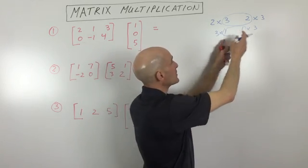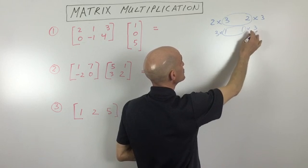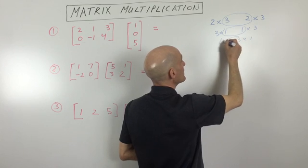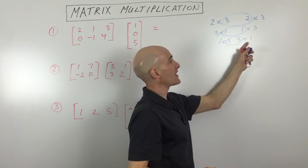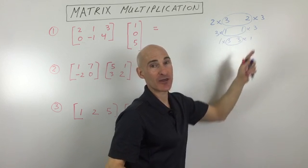Other times, you'll get a matrix that's a completely different dimension. So you can see with this one, if we change the order, we would get a one by three and then a three by one. The inner dimensions still match, but we're going to end up with a one by one, which is completely different than a three by three.